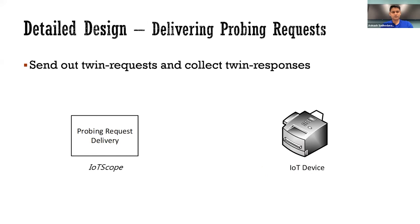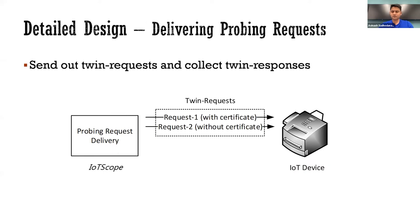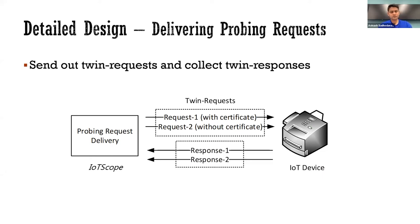IoTScope sends each probing request twice. The first request carries a certificate in the authenticated HTTP header, while the second request does not carry a certificate. We collect the twin responses for further processing.